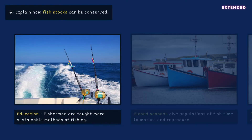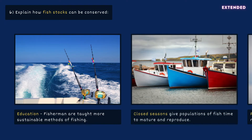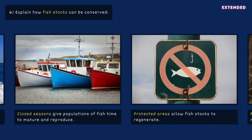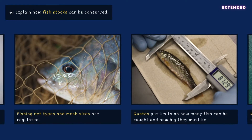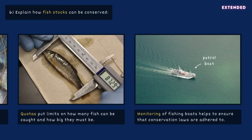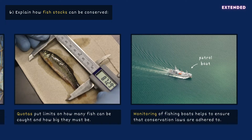Fish stocks can be conserved by educating fishermen about the impacts of their methods and teaching sustainable alternatives. Closed seasons allow fish stocks to regenerate, as they provide time for fish to mature and breed. Protected areas in which fishing is prohibited help to conserve endangered species and regenerate fish stocks. Regulating fishing net types and mesh sizes helps to limit the capture of undersized fish and organisms other than the target species. Legal quotas dictating how many of each species of fish may be taken by a fishing boat, and the size each fish must be, allows fish to reach breeding age and populations to be maintained. Finally, the monitoring of fishing boats and the fish that they catch helps to ensure that no fishing takes place out of season or in protected areas, and that boats are using the correct nets and keeping to their quotas.